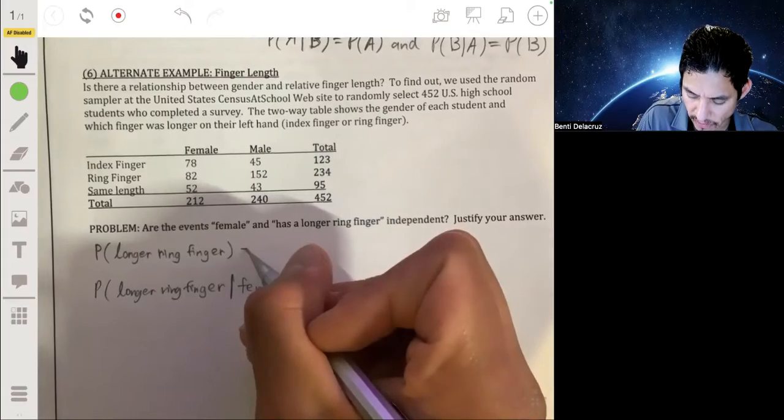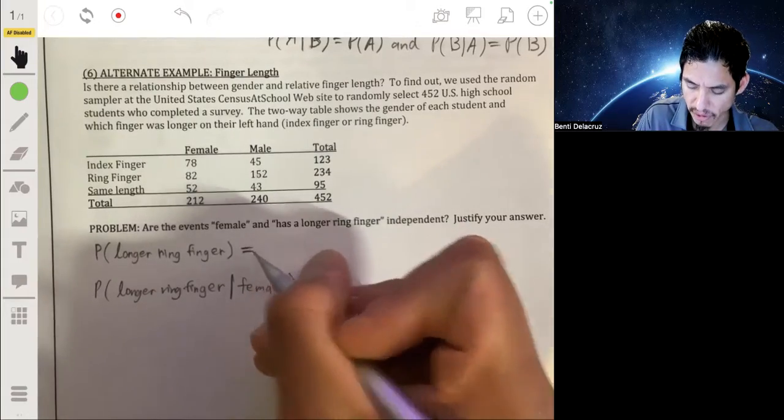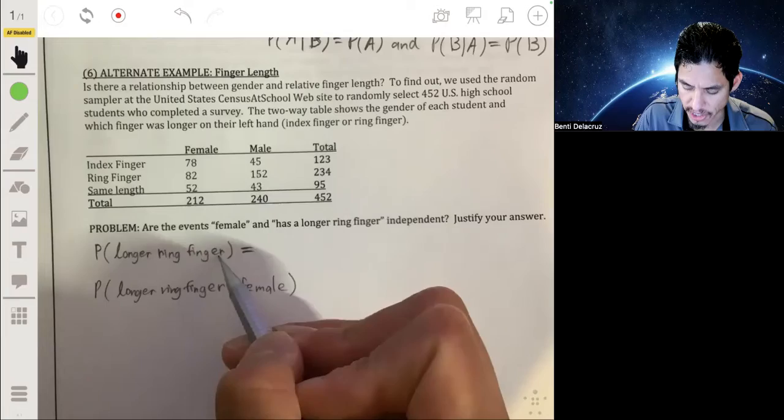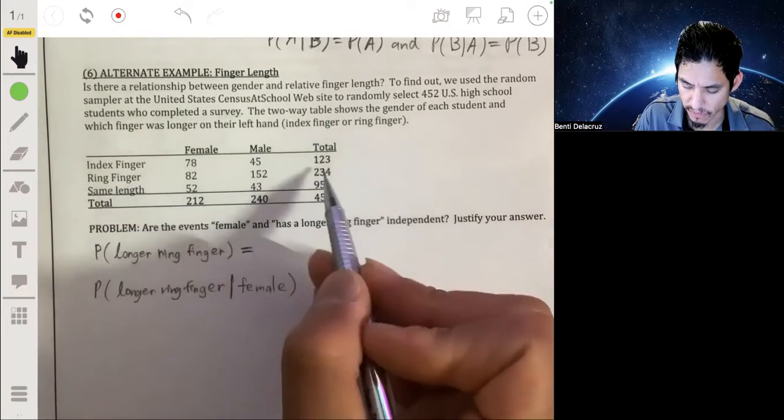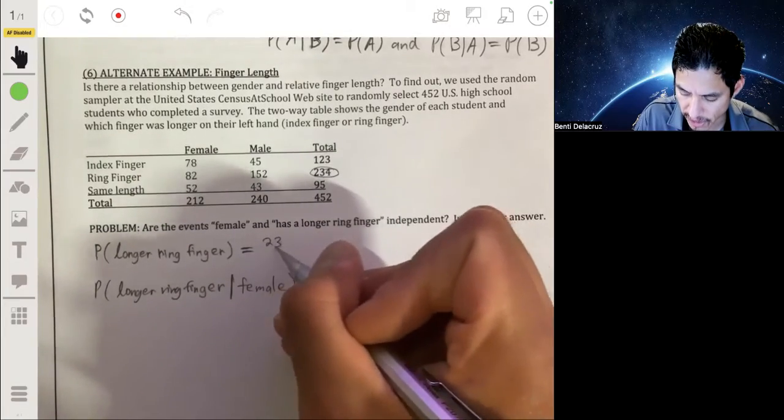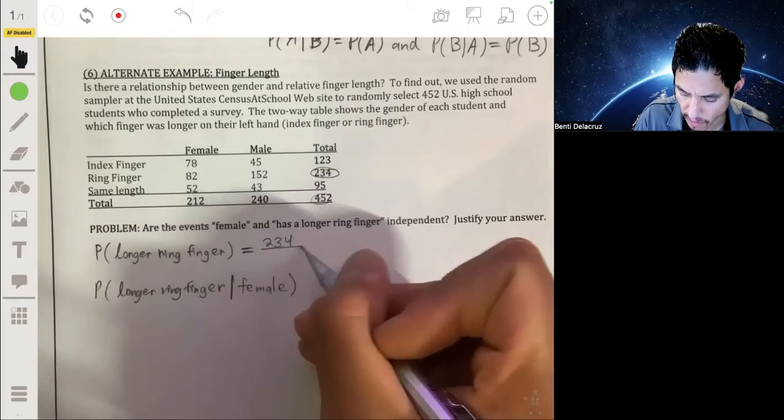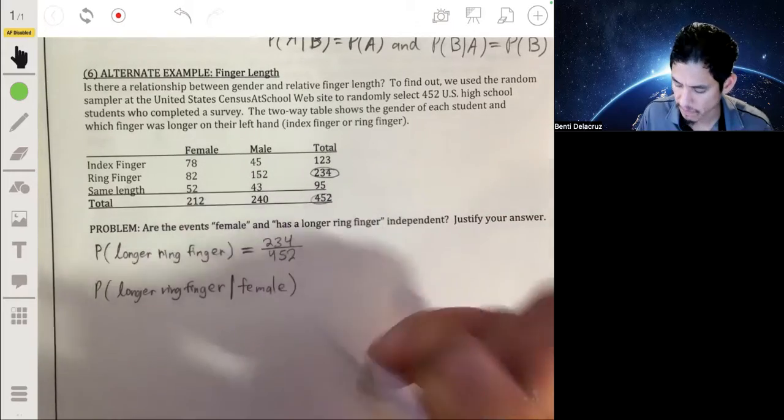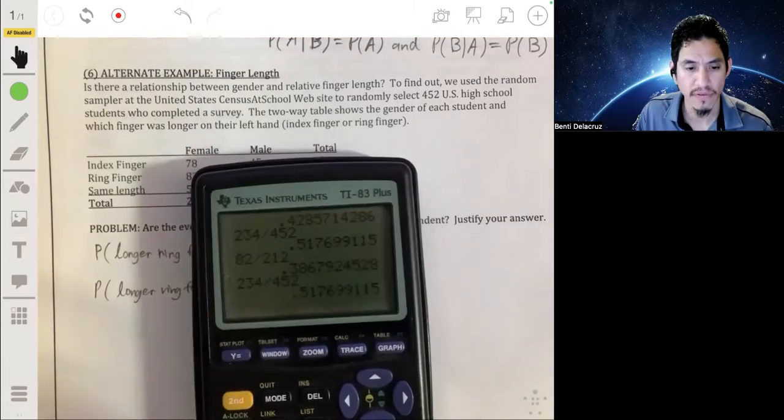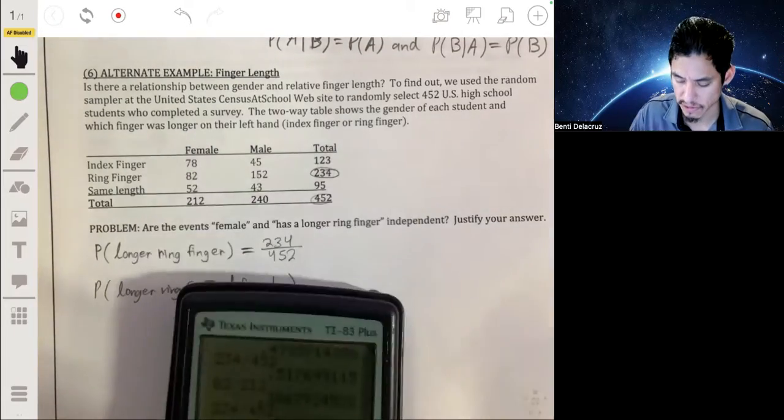So let's first figure out what the probability of having a longer ring finger is, just in general. So again, we don't care about genders. No condition here. We just look at the probability of having a longer ring finger. So it's the total, just 234 divided by 452. So 234 by 452, and we'll get about 0.518.